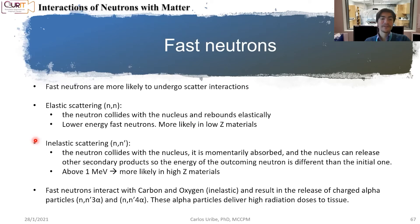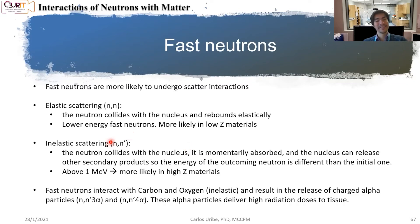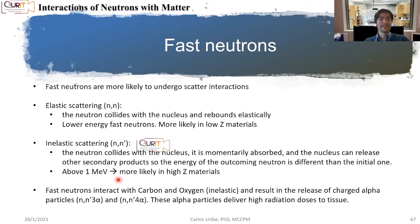You can also have inelastic scattering. In that case, the neutrons collide with a nucleus, are momentarily absorbed, and the nucleus releases other secondary products. So this incoming neutron loses energy — that's why I'm calling this N and N' to show that you have slightly different energy in those neutrons. This typically occurs for neutrons that have an energy of more than one MeV and is more likely to occur in high Z materials.